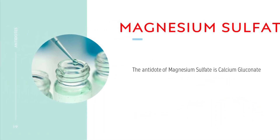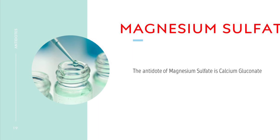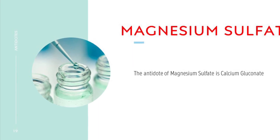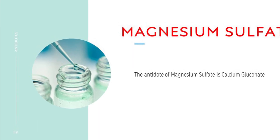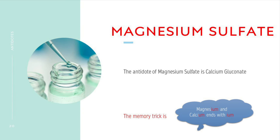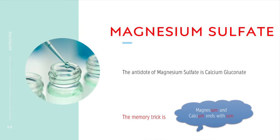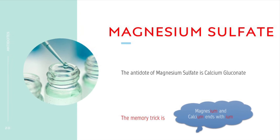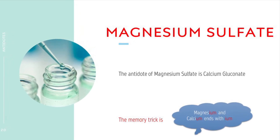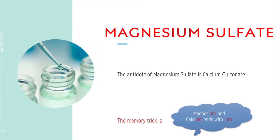Magnesium sulfate. The antidote of magnesium sulfate is calcium gluconate. The memory trick is magnesium and calcium both end with I-U-M.